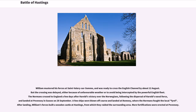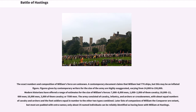William mustered his forces at St. Valery-sur-Somme, and was ready to cross the English Channel by about 12th August. But the crossing was delayed, either because of unfavorable weather or to avoid being intercepted by the powerful English fleet. The Normans crossed to England a few days after Harold's victory over the Norwegians, following the dispersal of Harold's naval force, and landed at Pevensey in Sussex on 28th September. A few ships were blown off course and landed at Romney, where the Normans fought the local fyrd. After landing, William's forces built a wooden castle at Hastings, from which they raided the surrounding area.